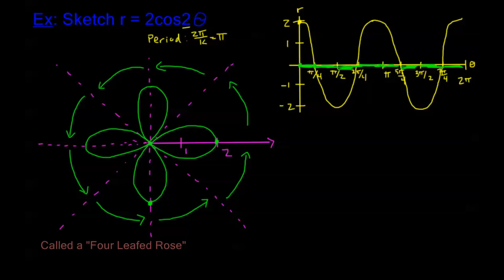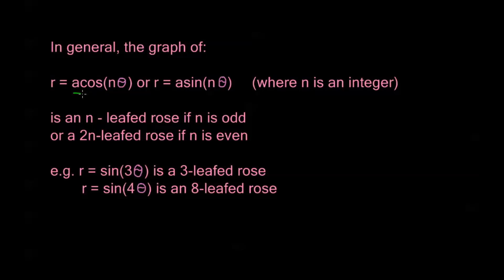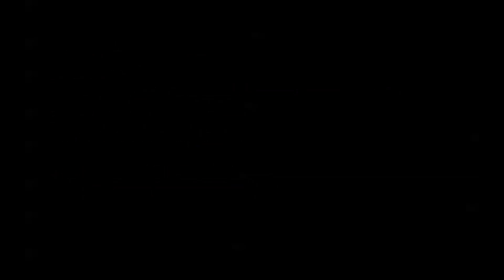Now let's go ahead and take a look at some more details about this rose. Now in general, the graph of either of the functions r equals A cosine n theta or r equals A sine n theta, where n is an integer, these are going to be an n-leafed rose. Now it's n-leafed if n is odd, or a 2n-leafed rose if n is even. So if this number here is odd, I have that many leaves in my rose. If it's even, I have twice that number. We saw in our previous example, our example was cosine of 2. So my n was even. So I should expect to have 2 times this many number of leaves. And that's exactly what we have. We have 2 times 2 is 4 leaves. So this is a 2n-leafed rose or a 4-leafed rose.